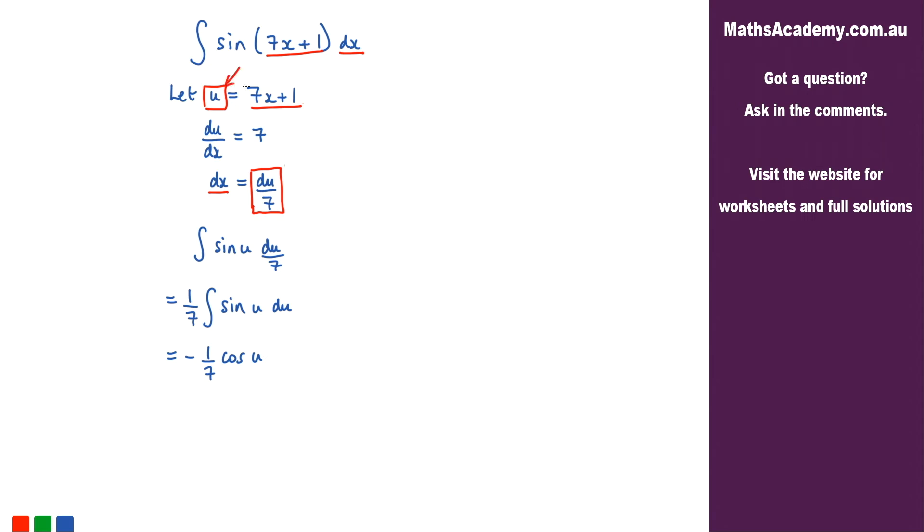But we already know that u here is 7x plus 1, so we can substitute that back in. So we get negative 1 over 7 cosine of 7x plus 1.